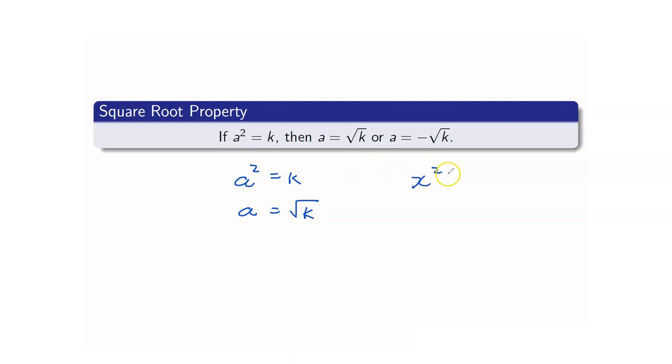For example, x squared is equal to 25. You cannot say that x is just equal to 5, because square root of 25 is 5. It should be plus or minus the square root of 25, which is 5.